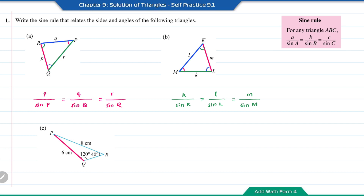For question C, the length PQ (6 cm) is opposite sine angle R (40°), and the length PR (8 cm) is opposite sine angle 120°. As for length QR, it is opposite sine angle P, but we don't have that information. So the sine rule for question C is: 6 cm over sine 40° equals 8 cm over sine 120°.